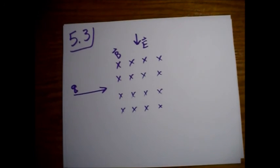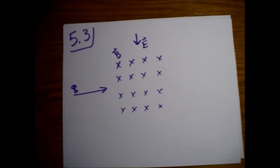This is Griffith's Electrodynamics, problem 5.3. Looking back in 1897, J.J. Thompson discovered the electron by measuring the charge-to-mass ratio of cathode rays, which are actually streams of electrons with charge Q and mass M. Here's the first setup that he did.